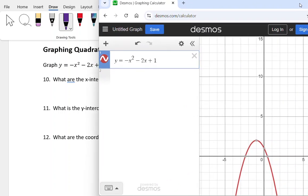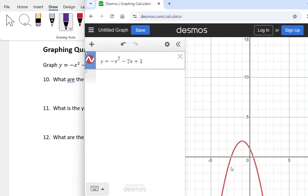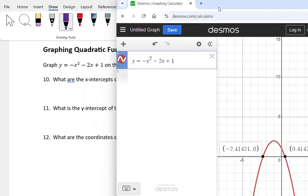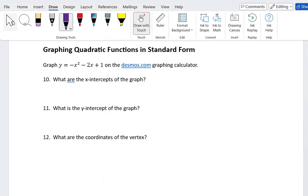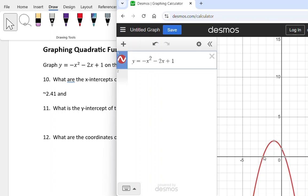So here's my graph. My first question is: what are the x-intercepts of the graph? When I click on the x-intercepts I can see that I get -2.41421 and 0.41421. We talked earlier about how to find x-intercepts using the quadratic formula. We don't get nice whole numbers here. I could use the quadratic formula to find exact answers but that was an earlier video, so I'm just going to type in those approximate answers: -2.41 and 0.41.